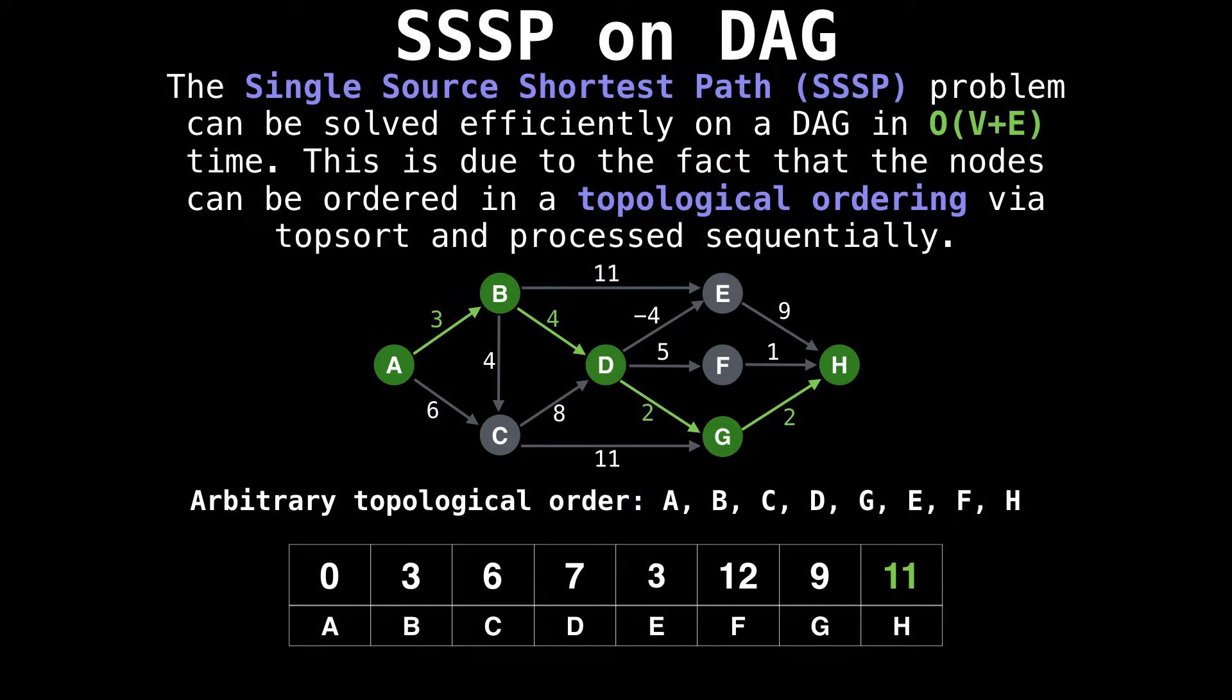Let's verify our algorithm computed the correct values by finding the shortest path to node H. Indeed, if we look at the path and sum up the values along the edges, you will find that they do indeed sum up to 11, which is the shortest path in our array for node H.